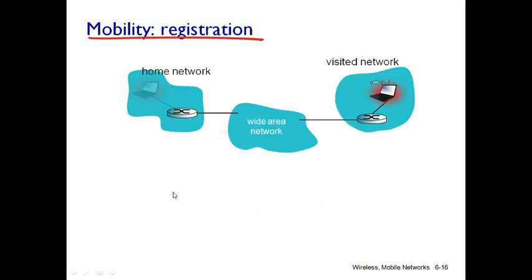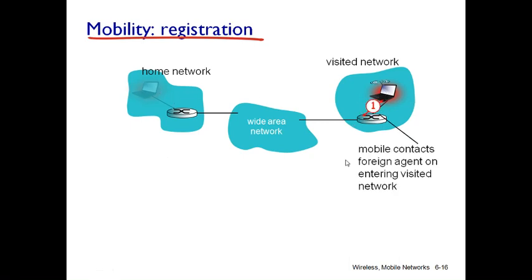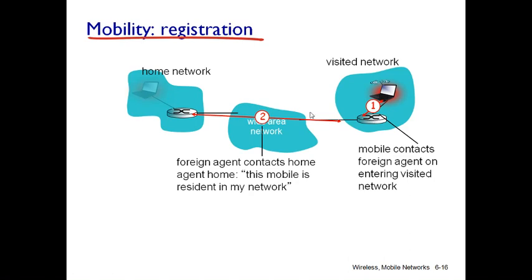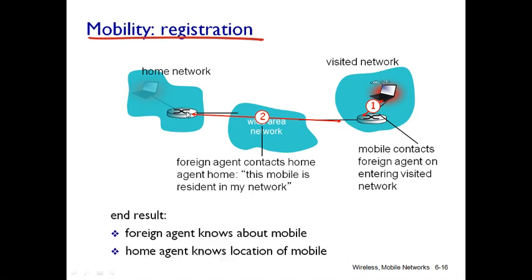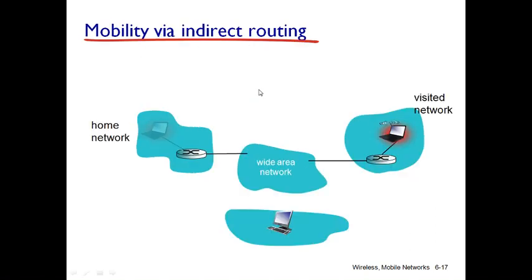Here you can see the home network and the visited network. The user left the home network and visited the foreign network. The mobile user will get an IP address from the foreign agent, and the same will be informed to the home network's home agent. At the end, both the foreign agent and home agent know about the mobile location. This is called mobility registration.